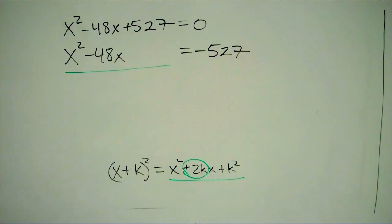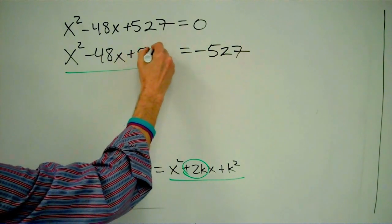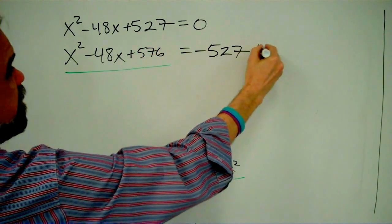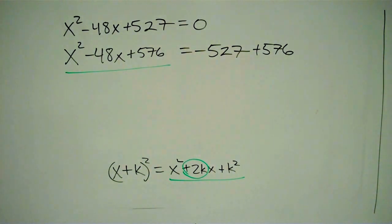Alright, well, I happen to know that 24² is 576, and that means that (-24)² is also 576. So I'm going to add 576 here and 576 over on this side. That's really the most important part of the entire process. Because now from here, everything is going to flow pretty easily.